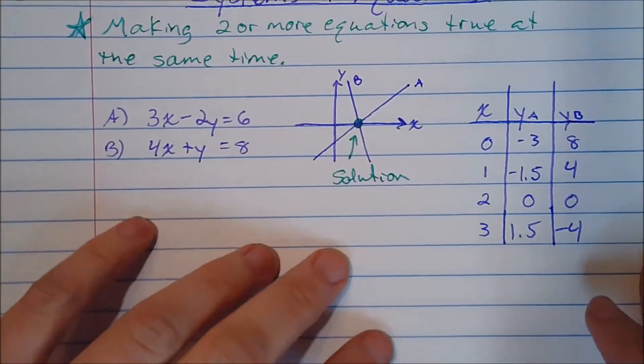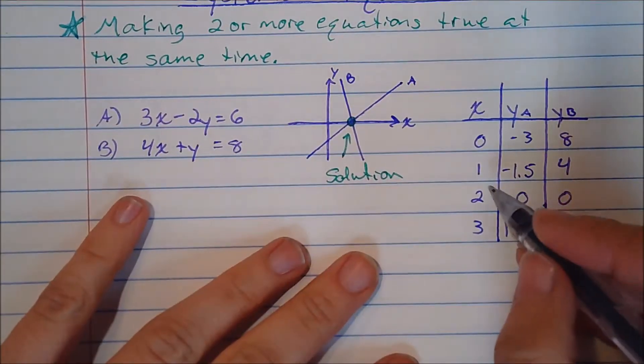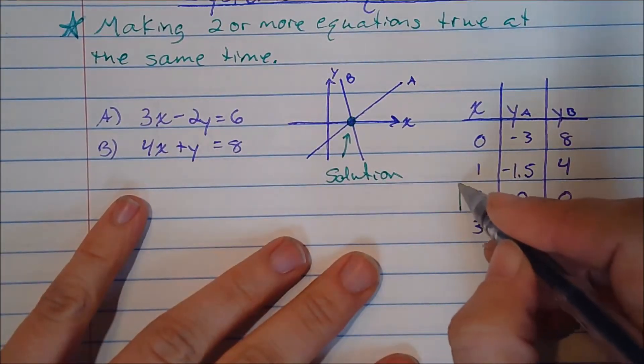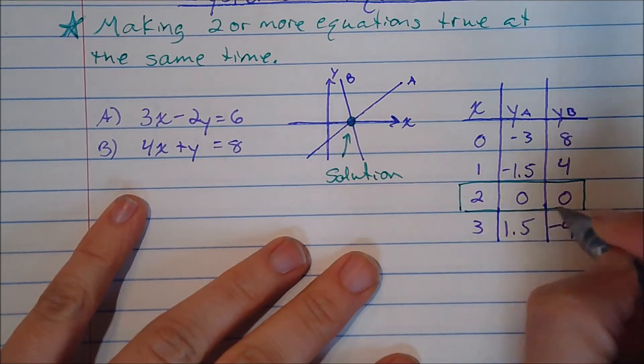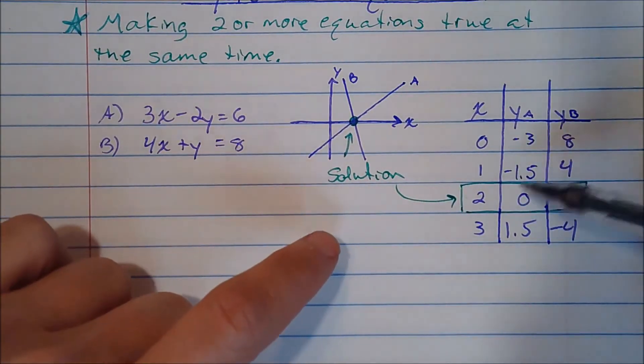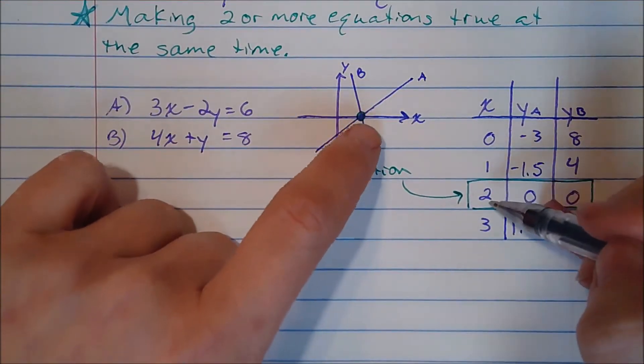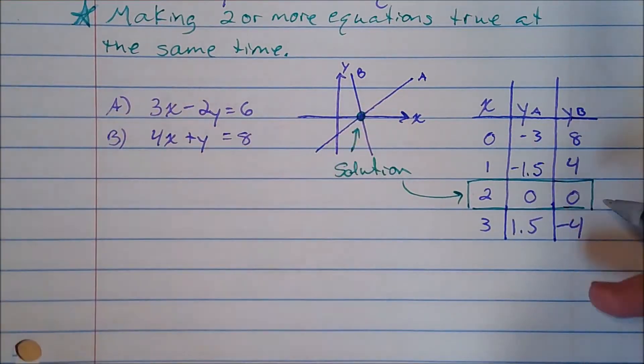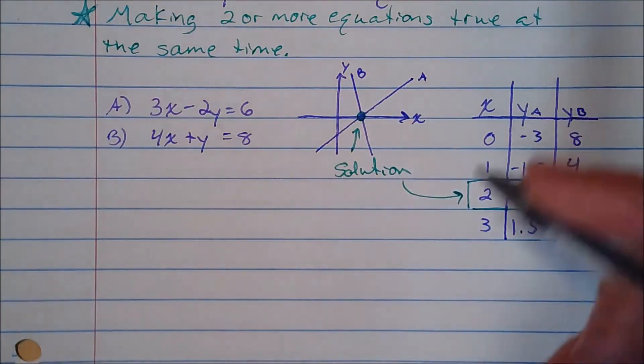Or, for example, if you're looking at a table of values, if you've got the same x and y values at the same time, that's your solution. So it's the point (2,0). Notice that they are both at x value 2 and y value 0 at the same time. So that is their solution.